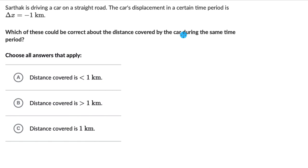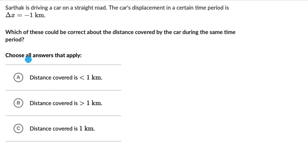Let's solve a couple of questions on the properties of distance and displacement. The first one says: Sarthak is driving a car on a straight road. The car's displacement in a certain time period is delta x, that is minus 1 kilometers. Which of these could be correct about the distance covered by the car during the same time period? We have to choose all the answers that apply, which means there could be more than one correct answer. Pause the video and give this one a try first.